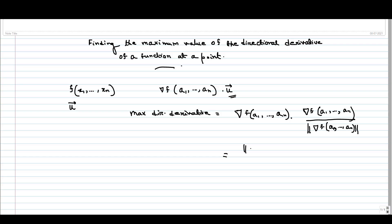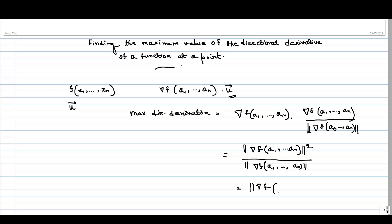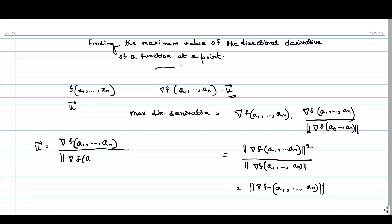At the numerator, we have the norm of the gradient vector at that point squared, and at the denominator, we have the norm of the gradient vector. These cancel out, and we get the norm of the gradient vector at that point. So this is the maximum directional derivative at the given point, and the direction u is the unit vector along the direction of the gradient — that is, grad f at (a1 to an) divided by the norm of grad f at (a1 to an). At this direction, the directional derivative will be maximum, and the value will be the norm of the gradient vector at that point.